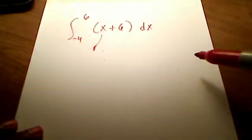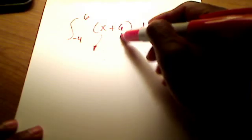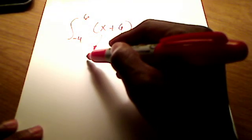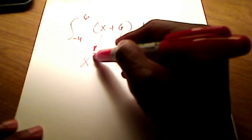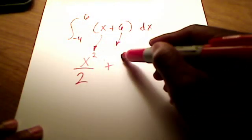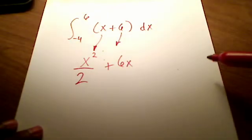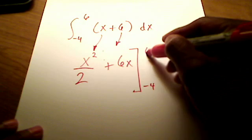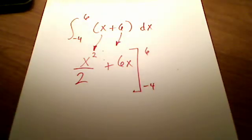The fundamental theorem of calculus says, first, give me the antiderivative of all the terms of this integrand right here, which I hope you see is simply x²/2 for that first one, and this one here is 6x. But what we're going to do is evaluate this between negative 4 and 6.